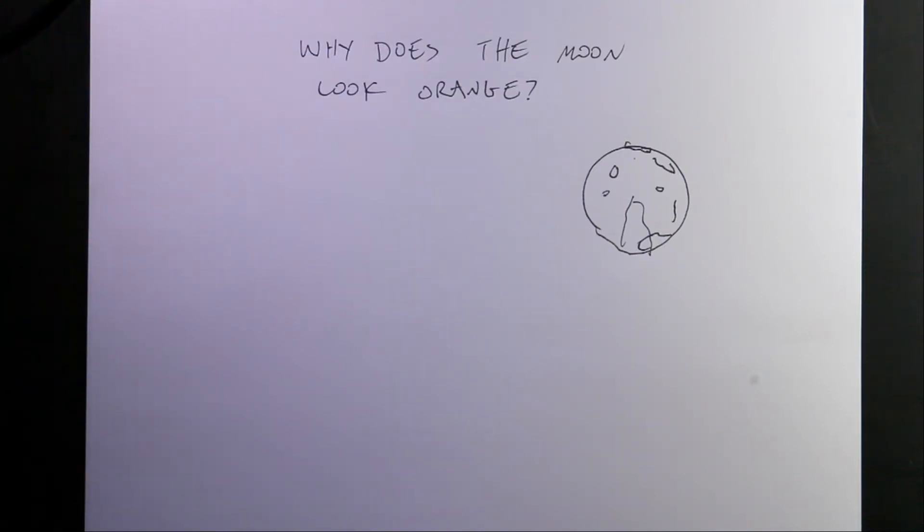I was recently asked the question, why does the moon look orange or yellowish orange when it's close down to the horizon? I'm going to explain this in the best that I can, but let's start with a couple of pictures.